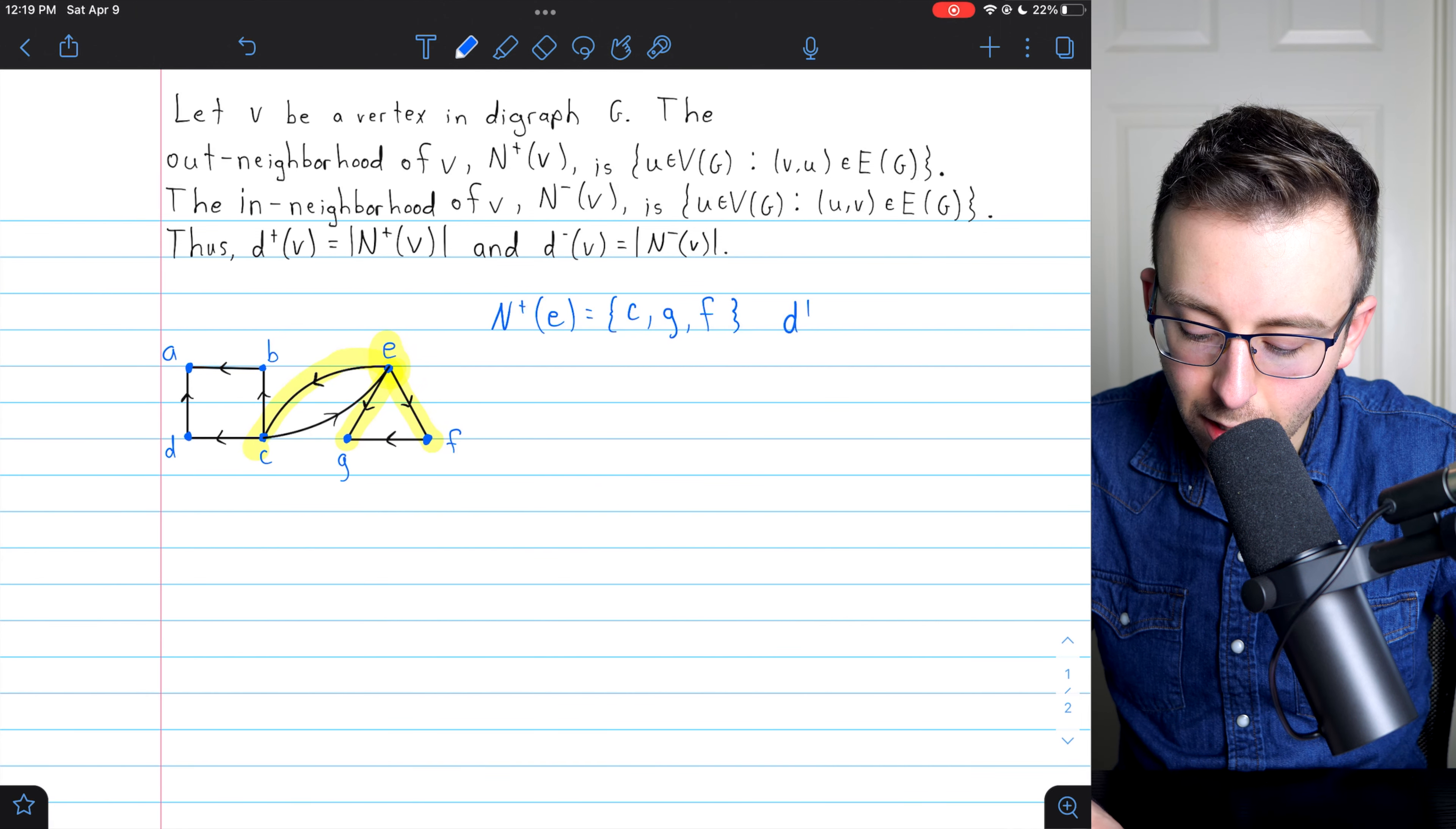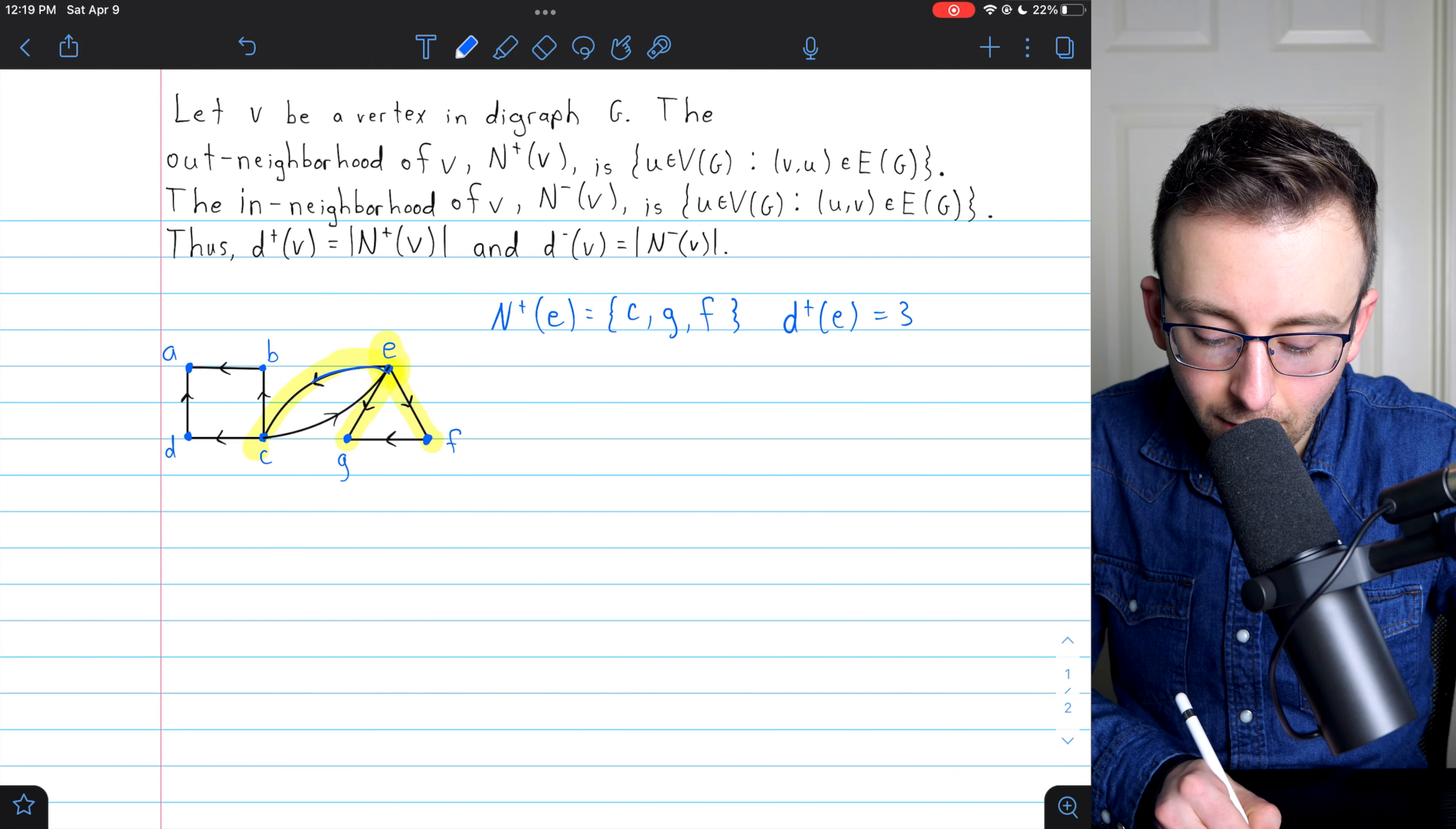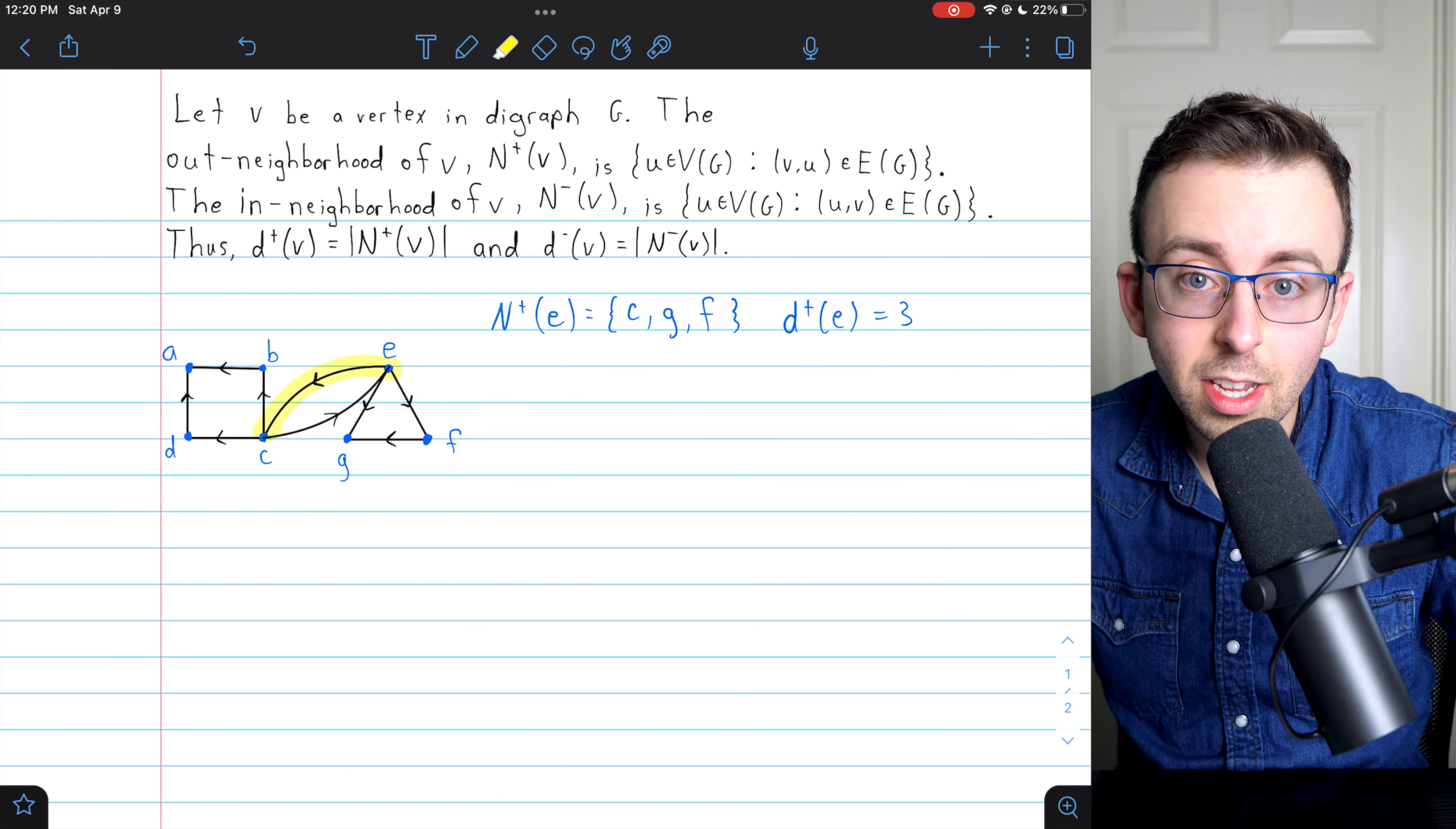And of course, if we wanted to mention this, the out-degree of E is three, because there are three edges going out of E. You also may notice that not only is E adjacent to C, E is also adjacent from C.